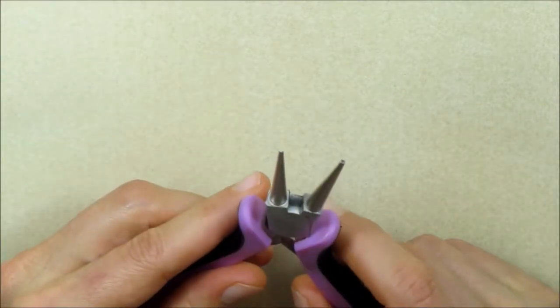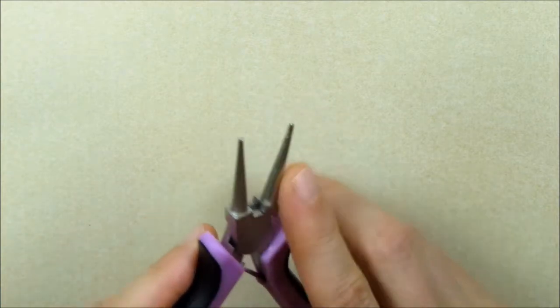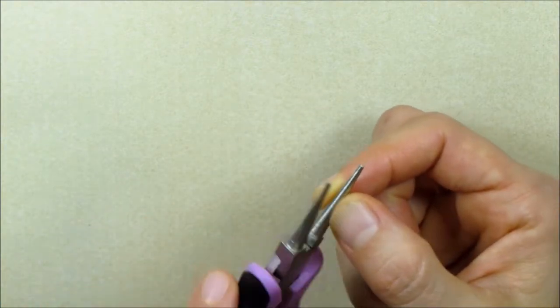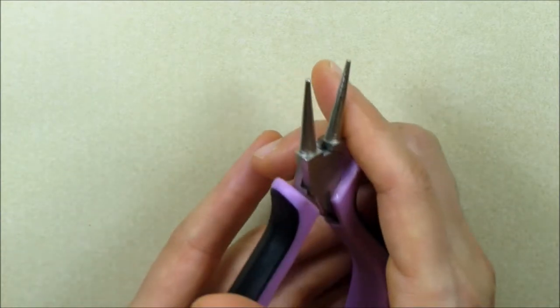First, round nose pliers won't work in chain mail. They are actually for curling and wrapping wire. They don't allow for a good strong grip on jump rings, which is absolutely essential in chain mail.